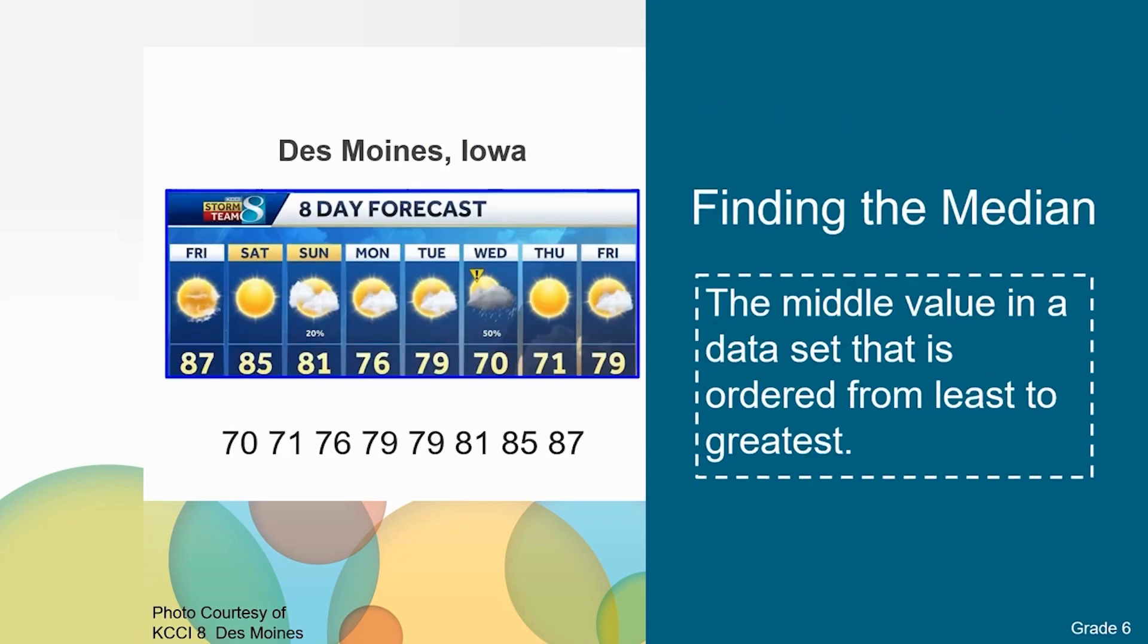Lastly, we are going to find the median for this set of data. The median is the middle value in a data set that is ordered from least to greatest. To find the median, I will order the temperatures from least to greatest. Then I will cross off each data point starting at the ends until I find the middle.